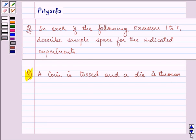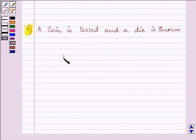So when we toss a coin we can either get head or tail, and then if we are throwing a die there is a possibility that